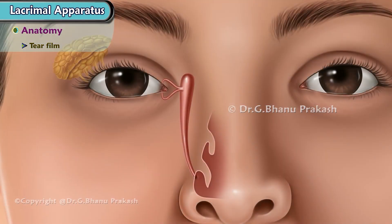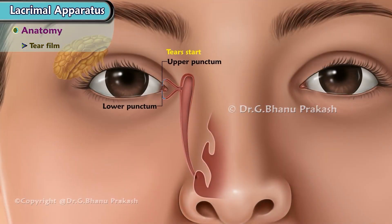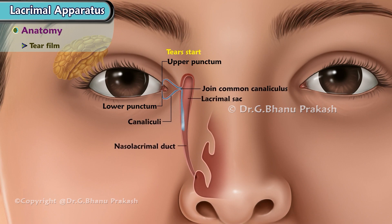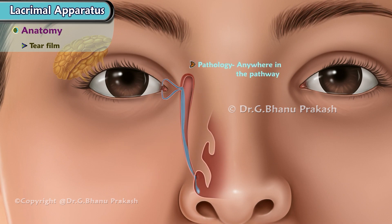Drainage of tears: Tears start from the upper and lower punctum, go to respective canaliculi, and then join at the common canaliculus. From there, tears enter the lacrimal sac and then to the nasolacrimal duct, which drains the tears into the inferior meatus of the nose. Therefore, any pathology anywhere in the pathway can lead to obstruction to drainage, and the patient will present with epiphora.